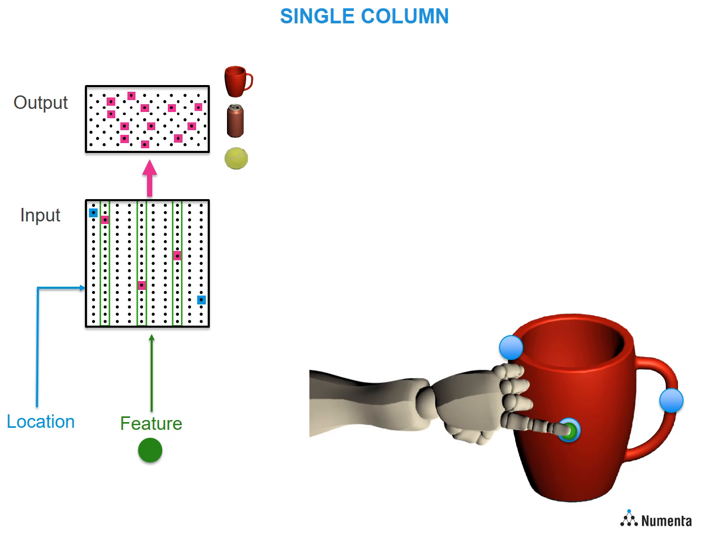What's happening here is the system is thinking, based on this sensory feature at this location, what could the object be? With this single touch, the system can eliminate many possibilities, but cannot disambiguate between these three objects.